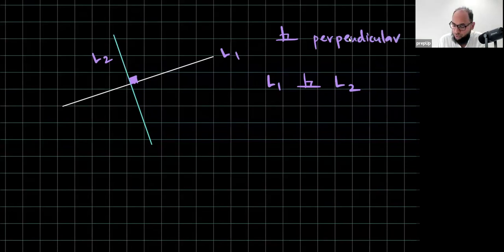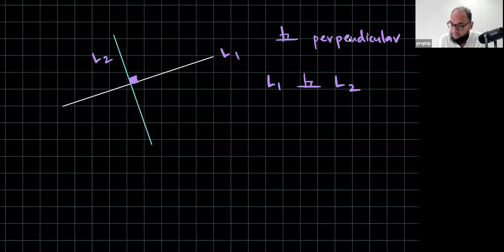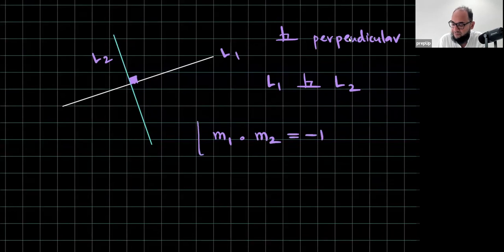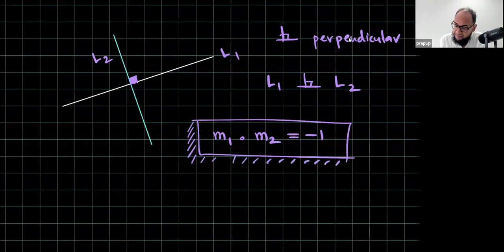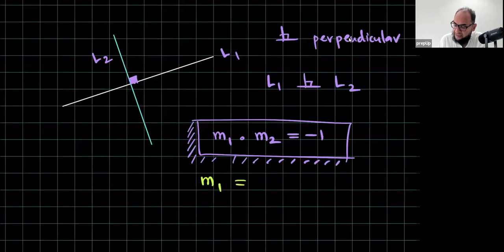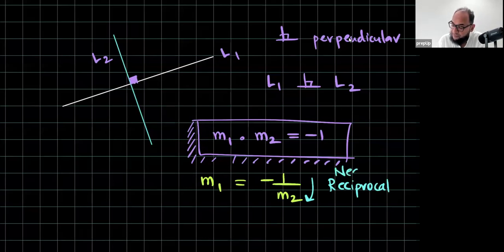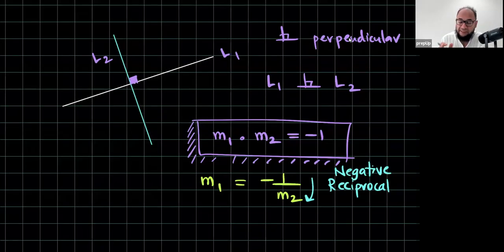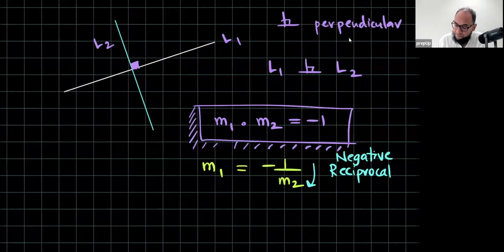L1 is perpendicular to L2. So, what is the concept related to gradient? That is M1 dot M2 should equal to negative 1. The gradients multiply to give you negative 1, a very important concept in coordinate geometry. If I make one gradient the subject M1, that is negative 1 over M2. So, basically, this is a reciprocal but it's not just a simple reciprocal. It's a negative reciprocal. So, remember this term, negative reciprocal. If two lines are perpendicular, one gradient is the negative reciprocal of the other.